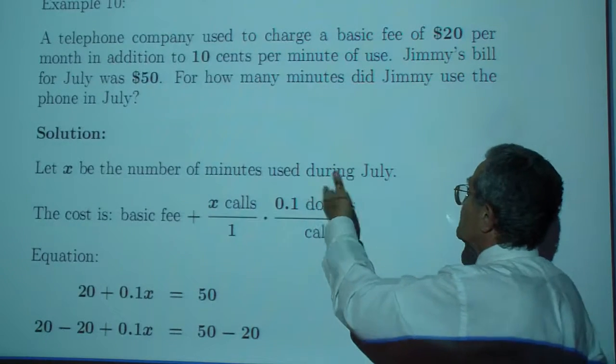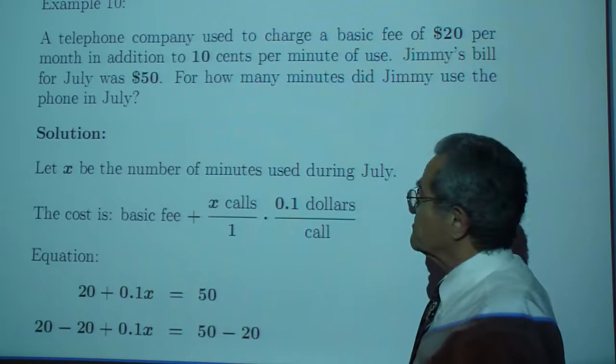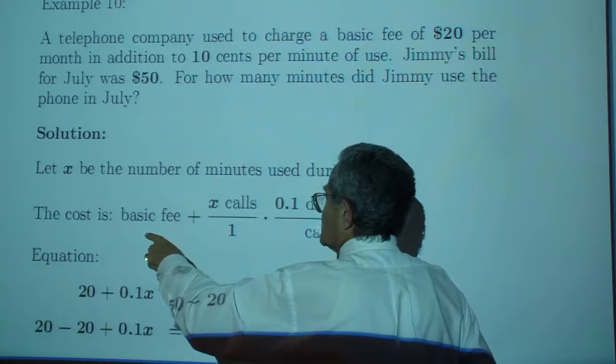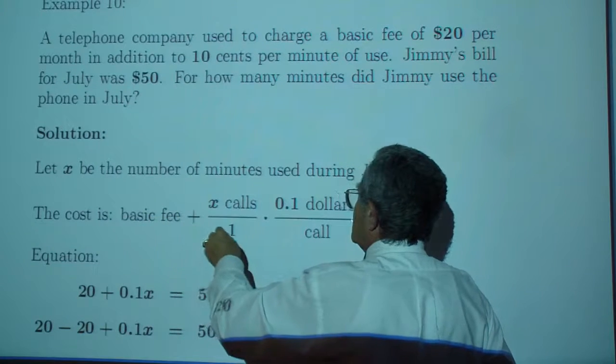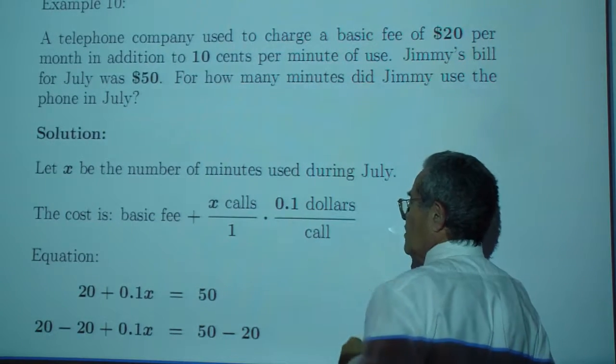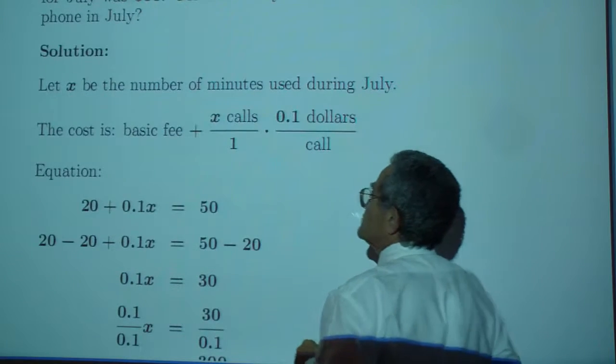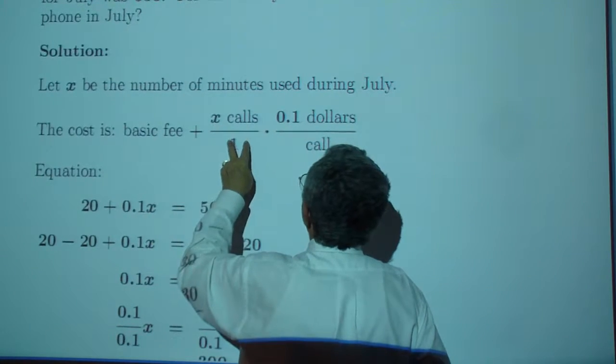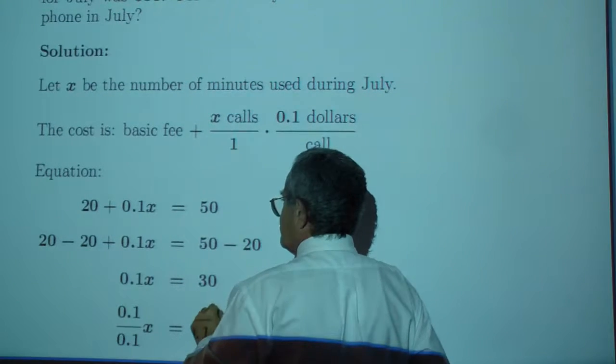Let X be the number of minutes used in July. We always know the answer, right? Then the cost is the basic fee plus the number of calls multiplied by the dollars per call. So the equation is 20 plus 0.1X, which is 50.